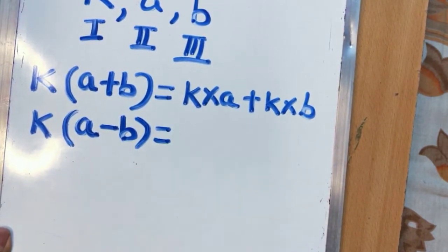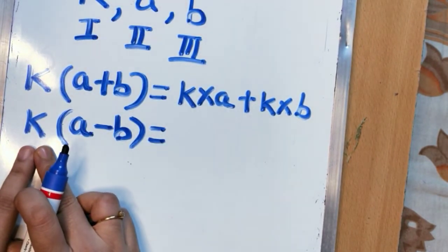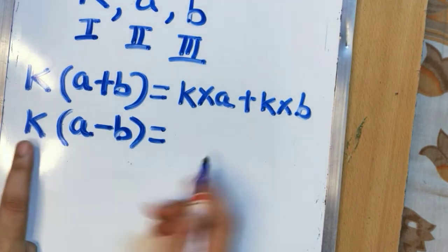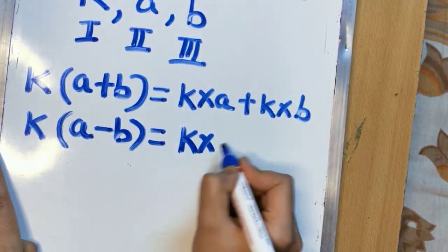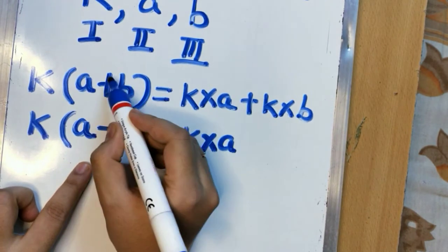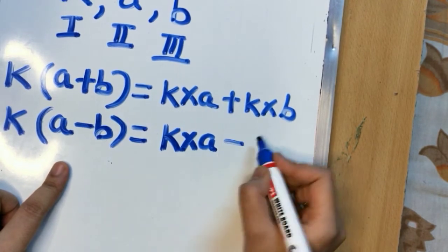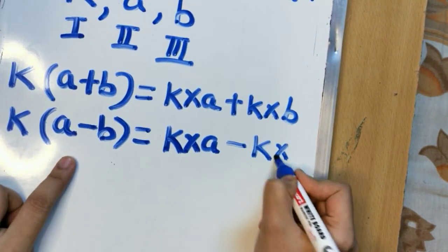With the help of law of distribution I am again multiplying this k with a. That means k into a and this minus sign will come. Previously plus sign now minus sign is there. So minus k into b.